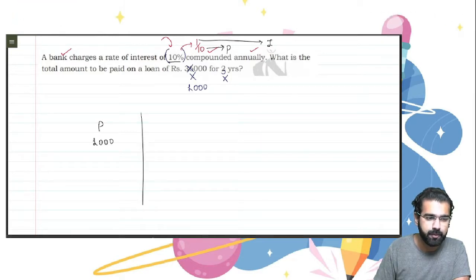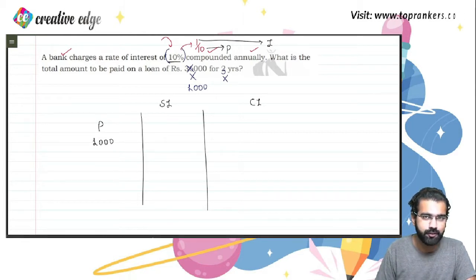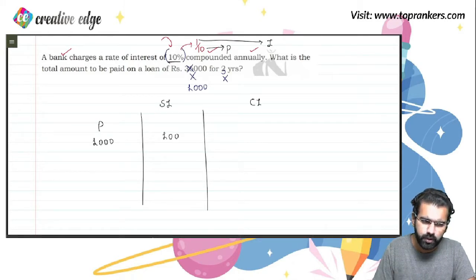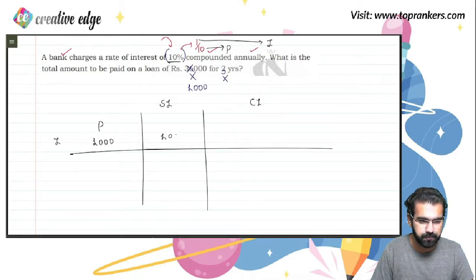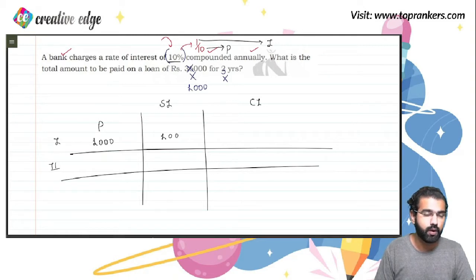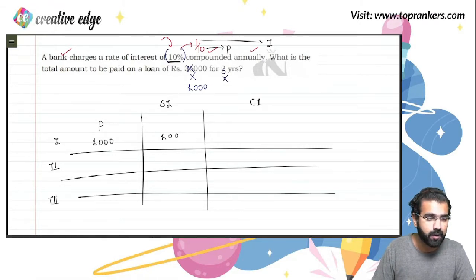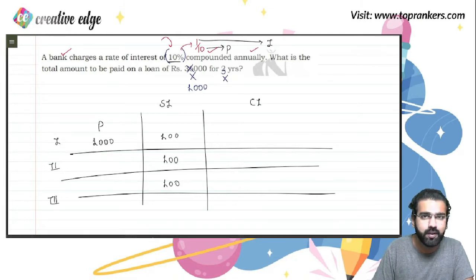Let's compare simple interest and compound interest side by side for more clarity. In simple interest, we evaluate 10% of 1,000: dividing by 10 gives 100. So the first year's simple interest on 1,000 is 100. In the second year, since the principal remains the same, 10% of 1,000 is still 100. The same holds for the third year. So total simple interest over three years is 300.